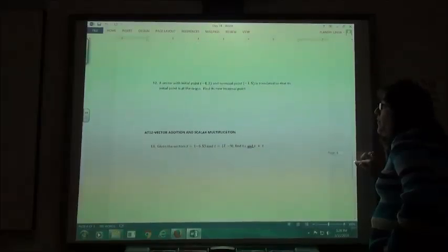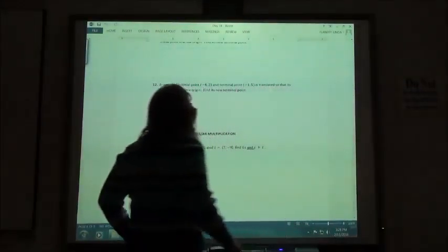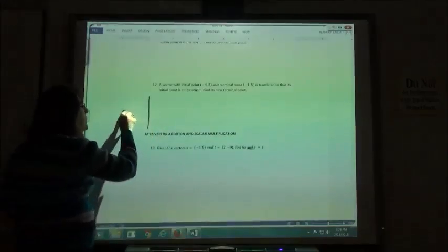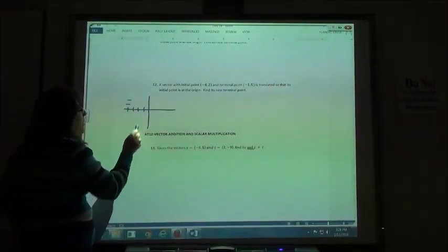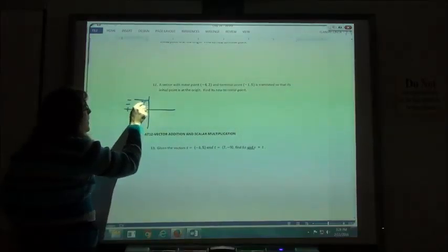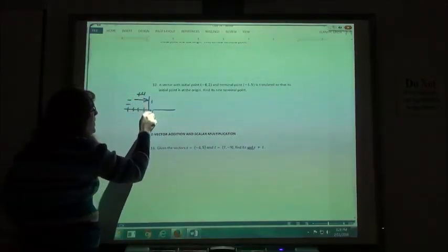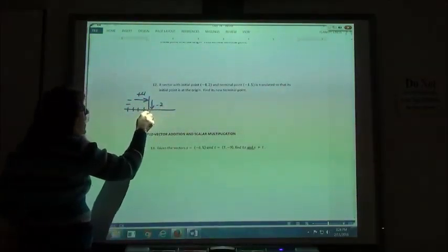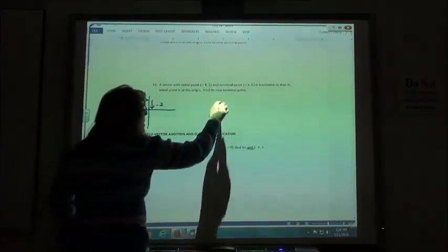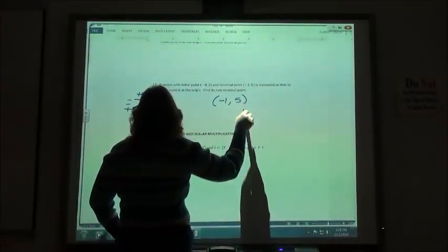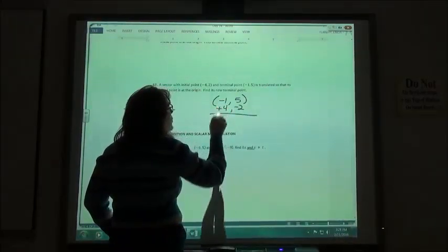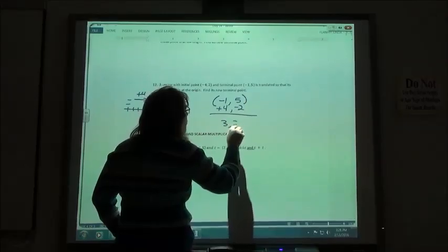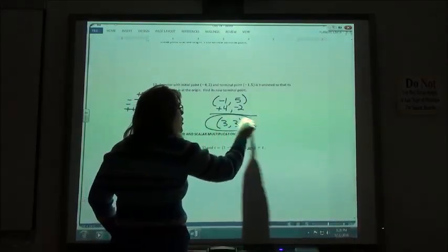So on this one, my vector has an initial point of negative 4, 2. So if it is at negative 4, 2, I would have to go positive 4 and down 2 to get back to the origin. So my terminal point was at negative 1, 5. I'm going to go positive 4 and down 2. And so now I'm going to be at 3, 3 for my new terminal point.